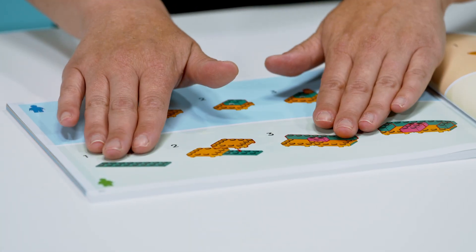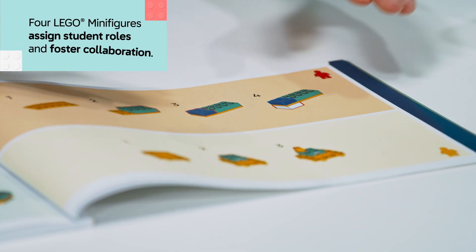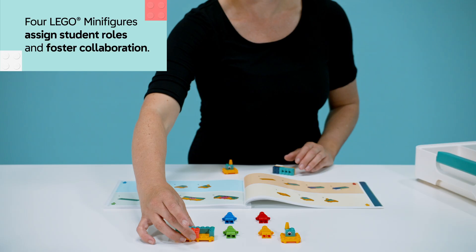Next, students collaborate in groups of four to build a squirrel and some seeds. The four colorful minifigures in each kit help students find their roles.